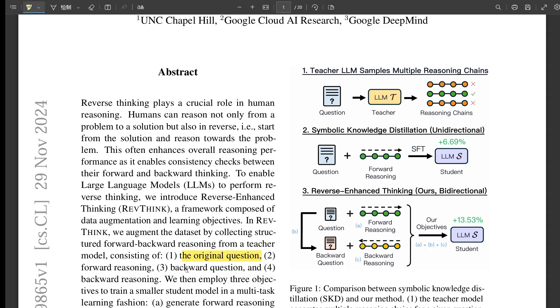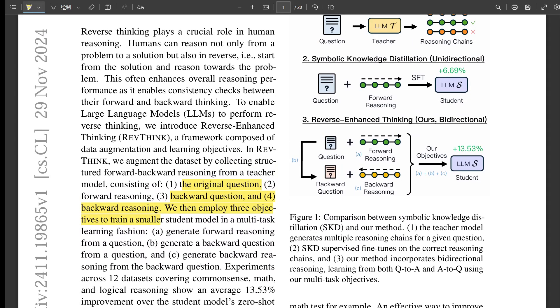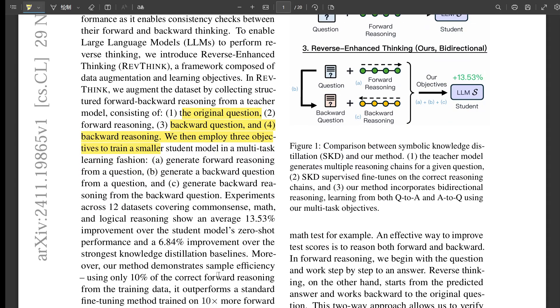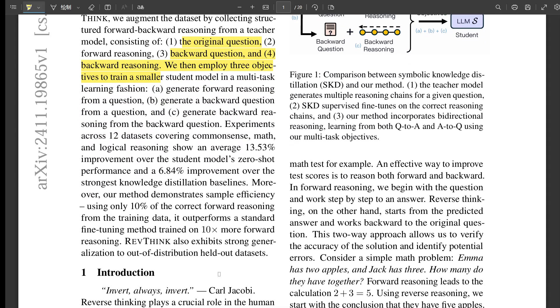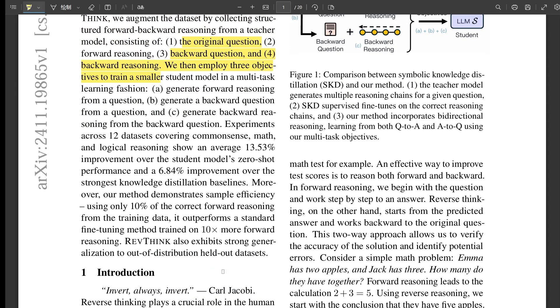For each question in the original data, the teacher model does three things. First, it gives you a step-by-step solution, kind of like showing your work on a math problem. Then it comes up with a backward question based on the answer. For example, if the original question was Emma has two apples, Jack has three, how many do they have total? The backwards question could be if they have five apples total and Emma has two, how many does Jack have? And then finally, the teacher model gives you the reasoning needed to answer that backward question, step-by-step.